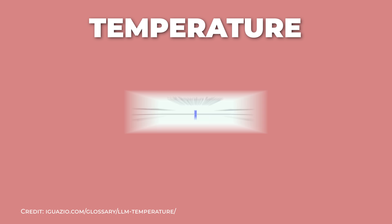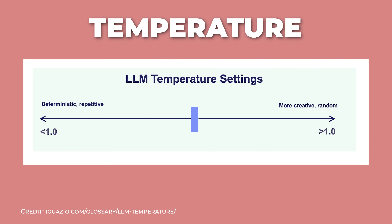One important setting is called temperature. Think of it like a creativity dial. Low temperature makes the model stick to safe, predictable answers, which is great when you need accurate facts. High temperature makes it more creative and surprising, perfect for brainstorming or writing stories, but riskier if you need more precise information.